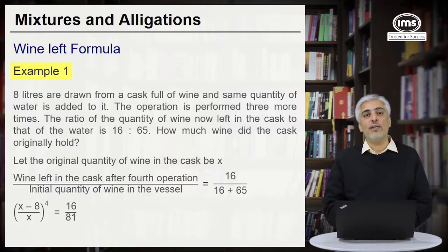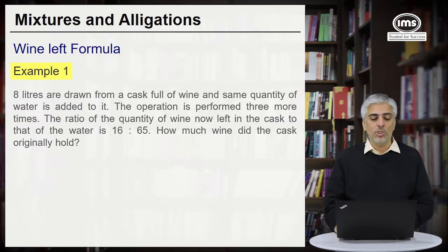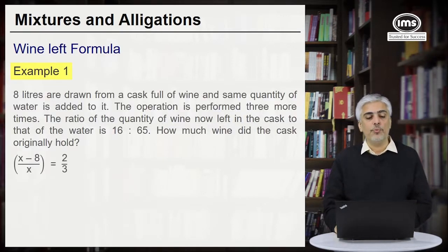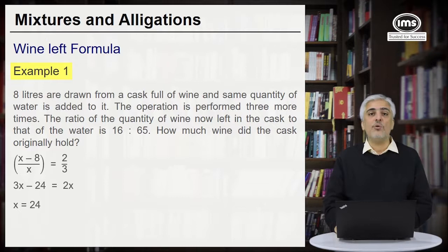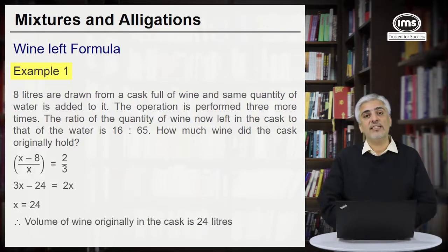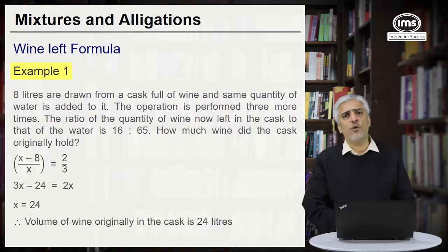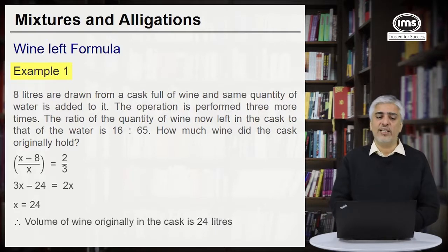Obviously 16 upon 81 we know is 2 raised to 4 upon 3 raised to 4. So we will get (x minus 8) upon x is equal to 2 upon 3. Cross multiply that you get 3x minus 24 equals 2x, so x equals 24. So 24 liters of wine was there initially in the vessel. So this was a very straightforward example to understand the concept of wine left formula.